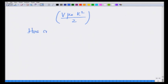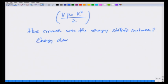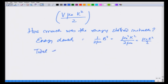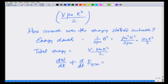How much energy was initially stored? The energy density in the magnetic field is (1/2μ₀) B² = μ₀²k² / (2μ₀) = μ₀k²/2. So the total energy in volume V was V μ₀k²/2, which has now flowed out through the surface via the Poynting vector. Thus the energy balance equation, dW/dt + d(E_EM)/dt = ∮ S · dA, is seen to be satisfied again.